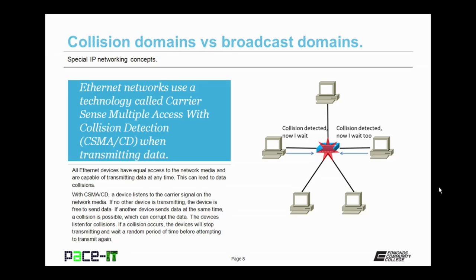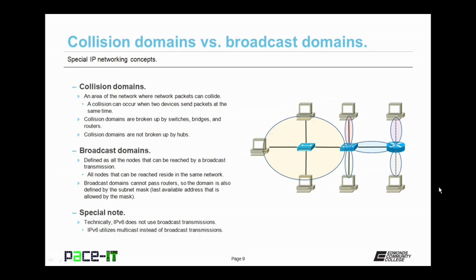The devices listen for collisions — that's the collision detection part. If a collision occurs, the devices will stop transmitting and wait a random period of time before attempting to transmit again. To do this, they use what is called a back-off algorithm. Collision domains are an area of the network where packets or network traffic can collide. There are some devices that break up collision domains: they can be broken up by switches, bridges, and routers, but not by hubs.